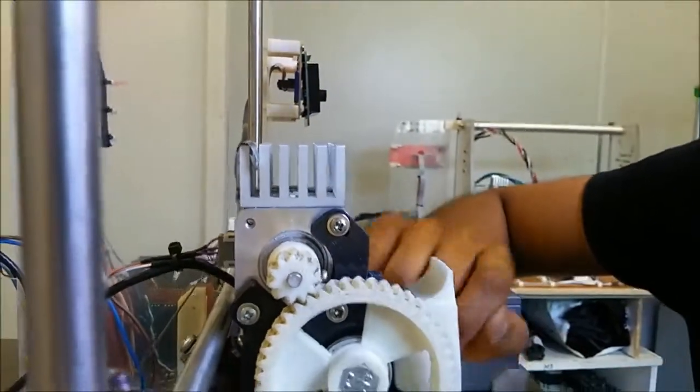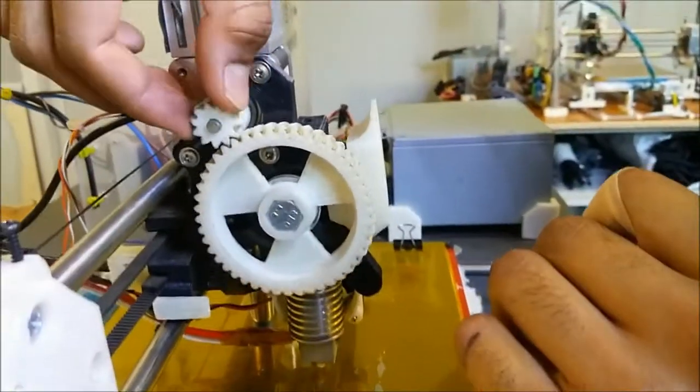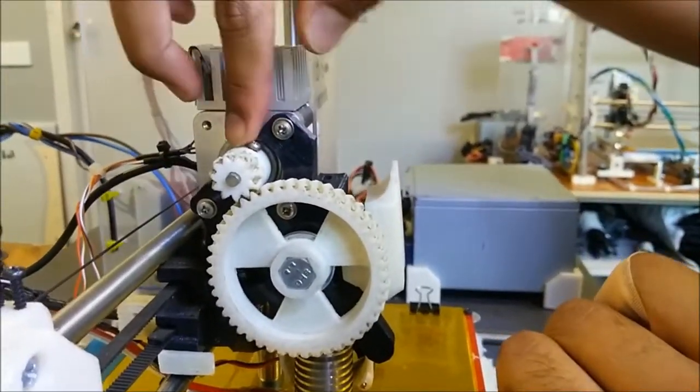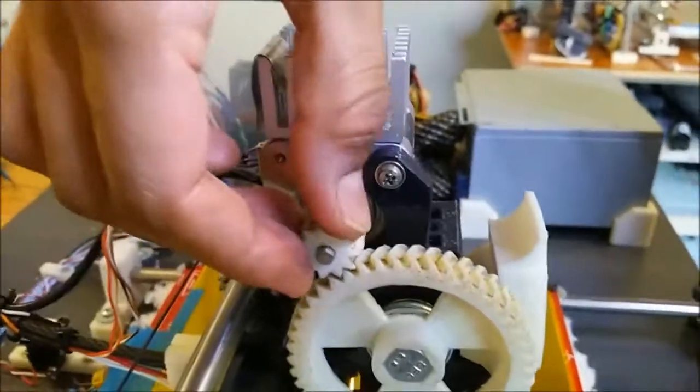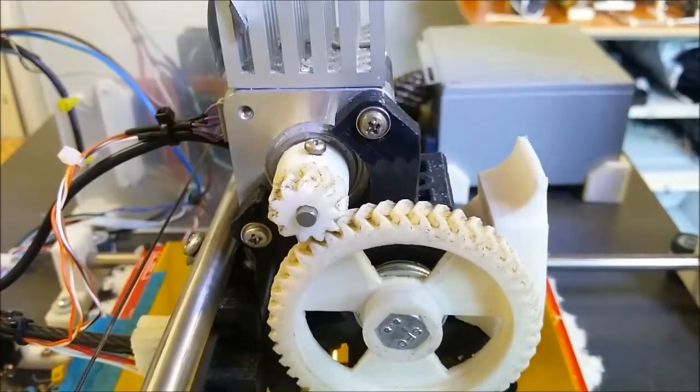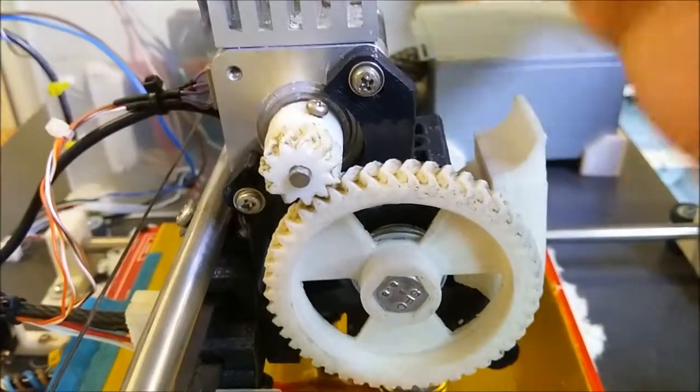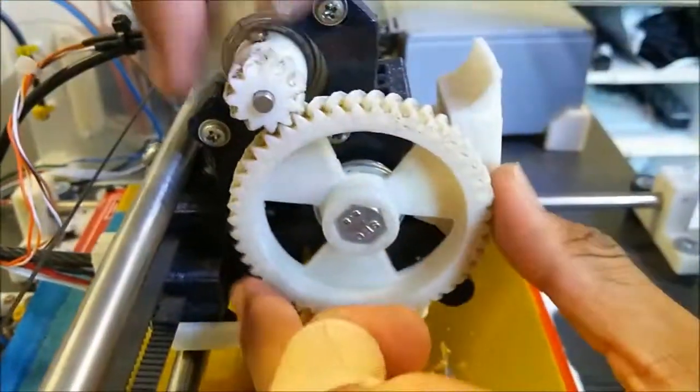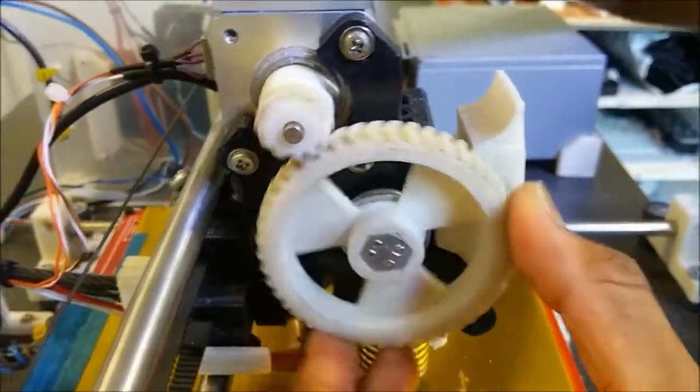Heat sink. Gears. So these gears, the first one here is secured with a grub screw onto this motor shaft. So there's a flat on there. Grub screw driven onto the flat of that shaft. These two gears need to line up so that they run smoothly.